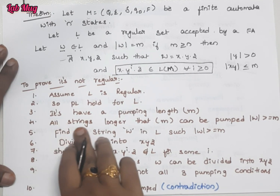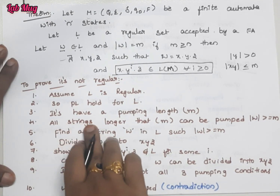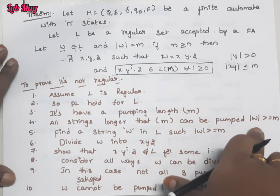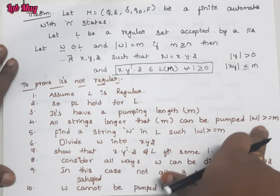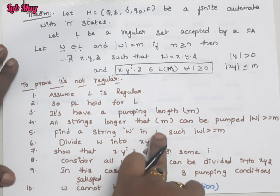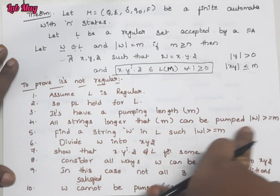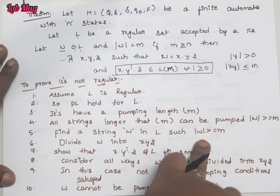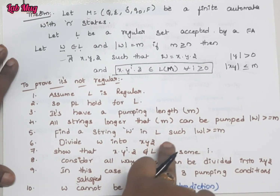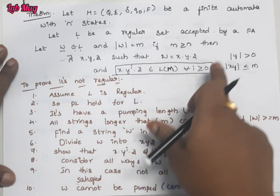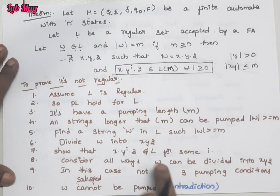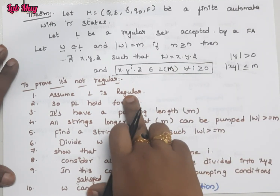Step-by-step solve chestham. Step one — assume given language L is regular. A language regular ani cheppi assumption chestham. Step two — given pumping lemma, aa language pumping lemma satisfy chestundi, hold chestundi. Step three — a pumping length m exists. Step four — ikkada tiskuna string sevajtunna avanni kooda 'longer than m can be pumped' — manam aa string W tiskuntam, W yokka length m kanna greater or equal ga undali. Then find W — oka W string find out chestam from language L. W ni 3 parts divide chestam — that is x, y, and z.